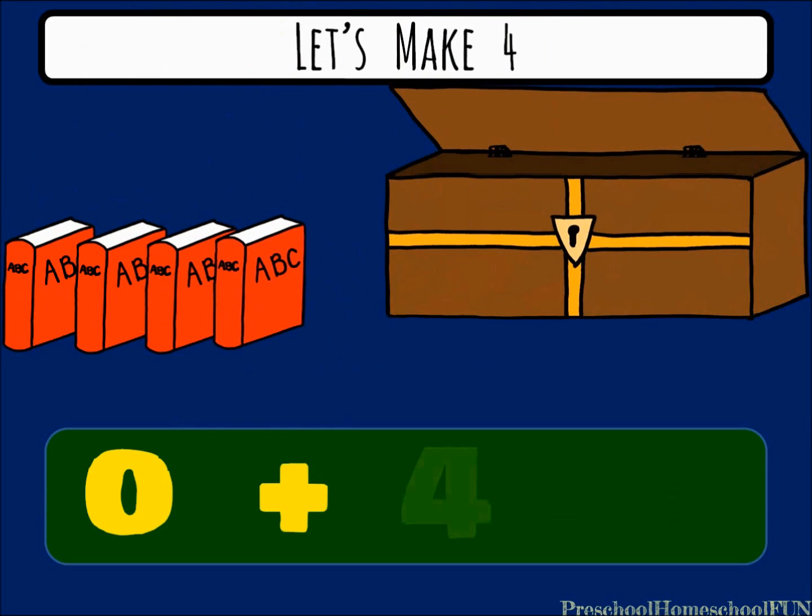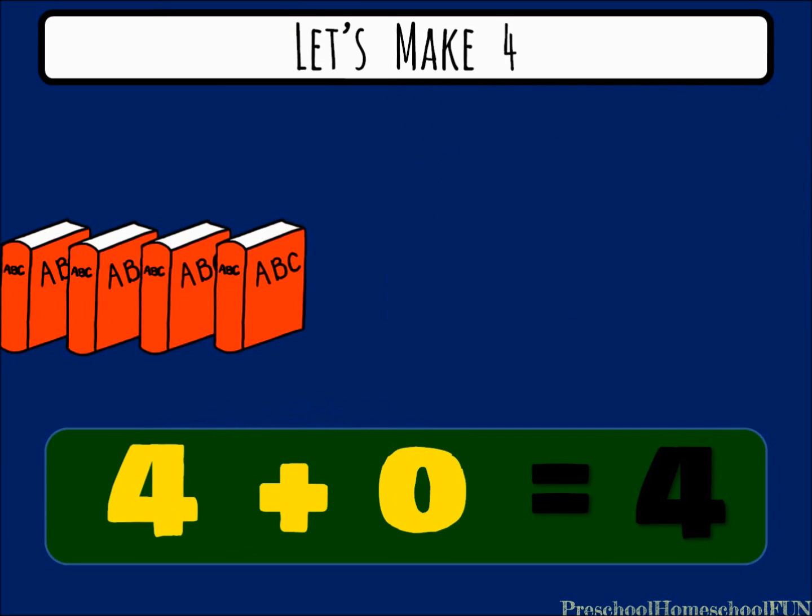Look, we got 4 books out of the toy box. 0 plus 4 equals 4. And 4 plus 0 equals 4.